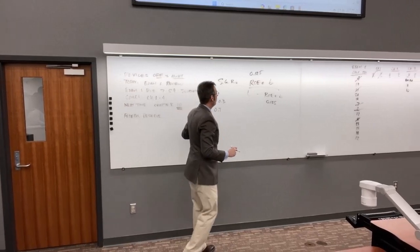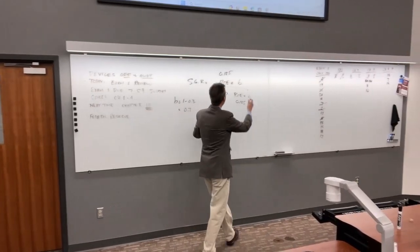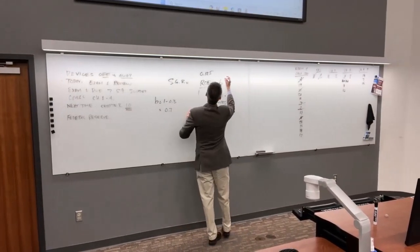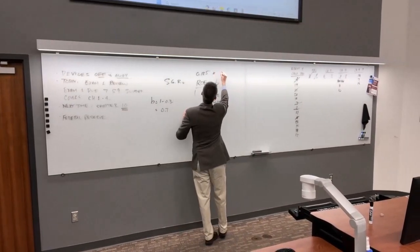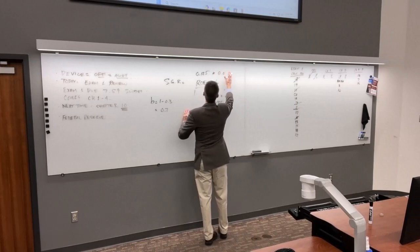So I'll plug in 0.125 for ROE and 0.7 for B into the SGR formula.